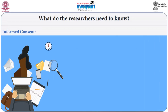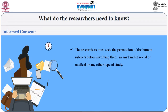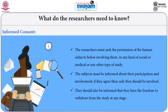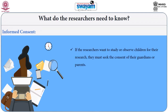The next aspect is informed consent. Researchers must seek the permission of human subjects before involving them in any kind of social, medical, or any other type of study. The subjects must be informed about their participation and involvement, and if they agree, only then should they be involved. They should also be informed that they have the freedom to withdraw from the study at any stage.